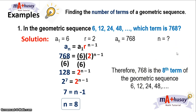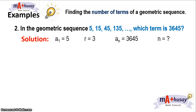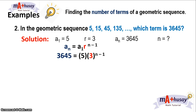Example number 2. In the geometric sequence 5, 15, 45, 135, which term is 3,645? We identify first the first term, the common ratio, and a sub n. In this case, the first term is 5, the common ratio is 3, and a sub n is 3,645. Using the geometric sequence formula, a sub n equals the first term times the common ratio raised to n minus 1. Substituting these values, we have 3,645 equals 5 times 3 raised to n minus 1.